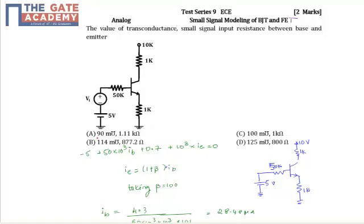In order to find out the value of transconductance and small signal input resistance between emitter and base, we have to redraw this circuit. That is 5 volts, we have removed the voltage, and we have taken 5 volts and 50K.